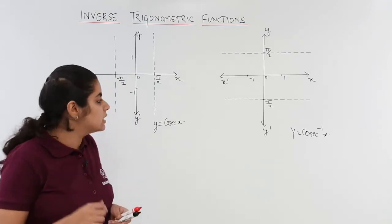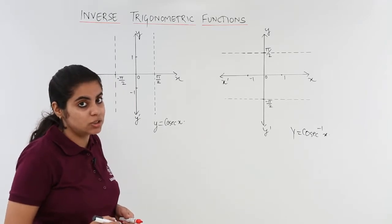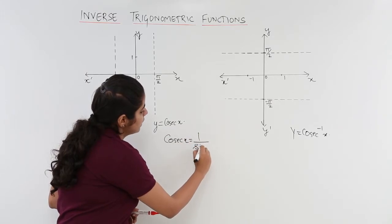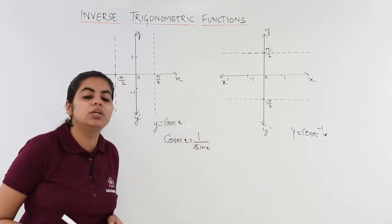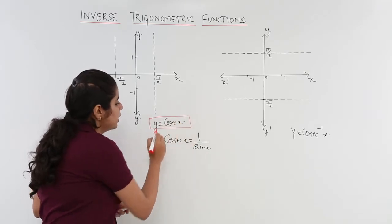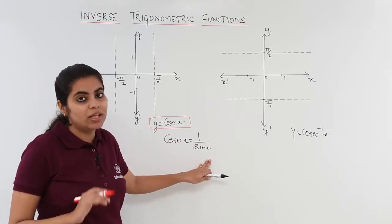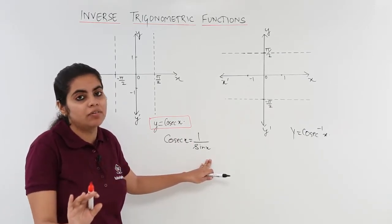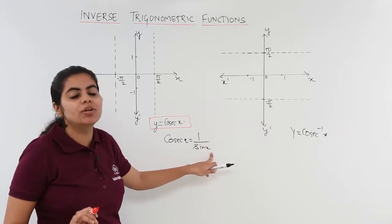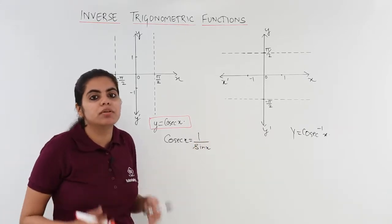Let me make it very clear what cosecant x actually is. Cosecant x is nothing but 1 upon sin x, which we already know. Since cosecant x is 1 upon sin x, what value will not be defined? The denominator can never be 0, so sin x should not be 0, meaning x should not be 0, because 1 upon 0 is not defined.